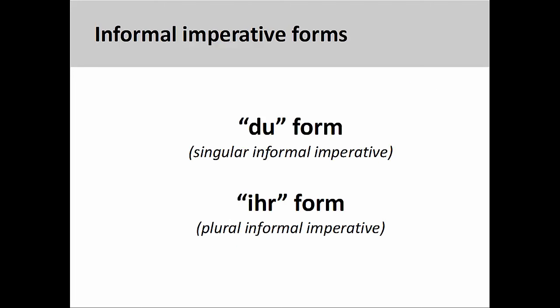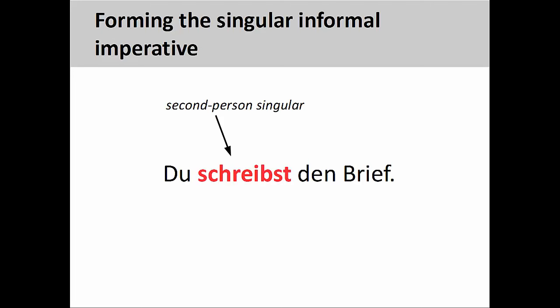The informal forms are a bit more complex. Although the verb will always come in the first position, the informal imperative forms depend on how many people are being addressed. We use the singular informal imperative, sometimes called the du form, to address only one person, and the plural informal imperative, sometimes called the ihr form, to address a group of people. Both forms are only used when talking with friends or family members. This presentation will examine only the singular informal imperative forms.